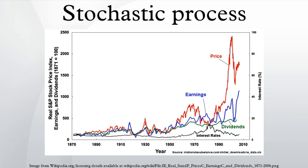Stochastic processes were first studied rigorously in the late 19th century to aid in understanding financial markets and Brownian motion. The first person to describe the mathematics behind Brownian motion was Thorvald N. Thiele in a paper on the method of least squares published in 1880. This was followed independently by Louis Bachelier in 1900 in his PhD thesis The Theory of Speculation, in which he presented a stochastic analysis of the stock and option markets. Albert Einstein and Marian Smoluchowski brought the solution of the problem to the attention of physicists, presenting it as a way to indirectly confirm the existence of atoms and molecules. Their equations describing Brownian motion were subsequently verified by the experimental work of Jean-Baptiste Perrin in 1908.